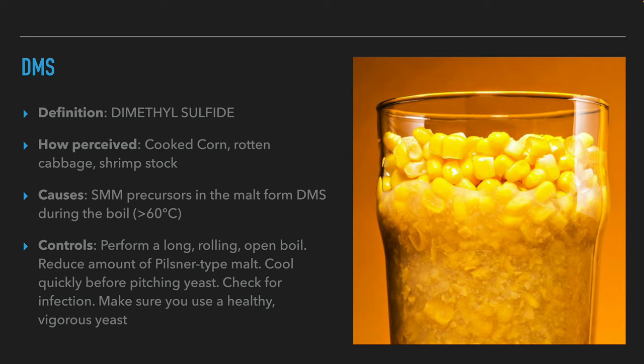Also, Pilsner malt contains eight times more SMM than pale ale malt due to lower kilning temperature. So if you're using Pilsner malt, do increase the boil time to evaporate more DMS. Also, the brewer should check for infections and make sure that they use healthy and vigorous yeast.